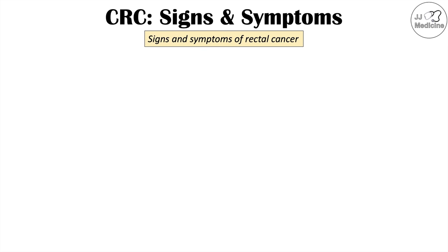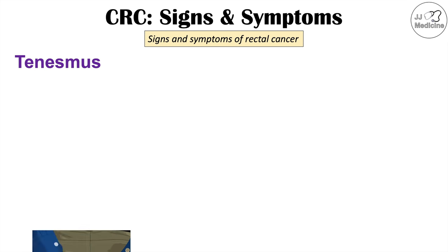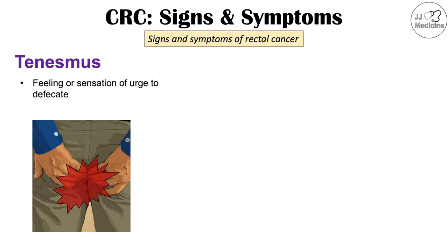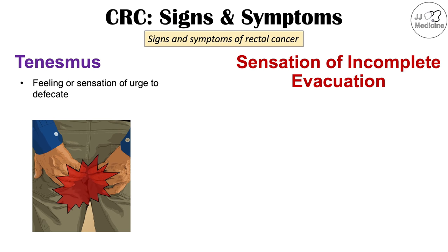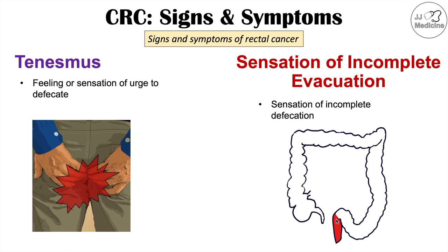There can also be signs and symptoms specific to rectal cancer. These include tenesmus — a feeling or sensation of urge to defecate — and a sensation of incomplete evacuation. If there's a large tumor in the rectum, the patient can sense something is there and may feel that evacuation is incomplete.